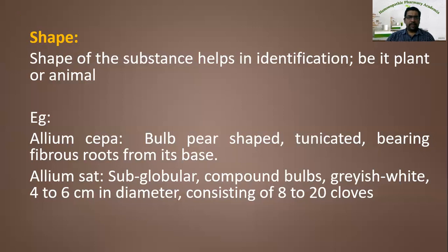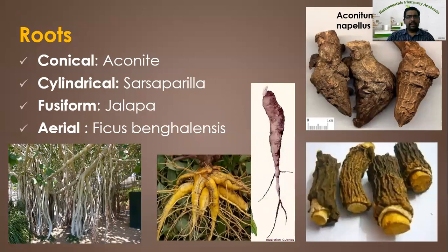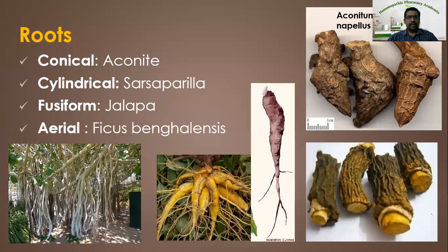There are some more root examples. By seeing the root, you can identify which species of drug it is. If it is conical, it may be aconite. If it is cylindrical, it may be sarsaparilla root. Jalapa root is fusiform — one end is tapering with fibrous root. We can also see the aerial root in Ficus indica or Ficus bengalensis, that is the banyan tree. With these, we can easily identify the particular species of plant.